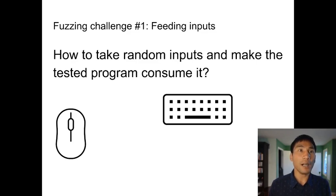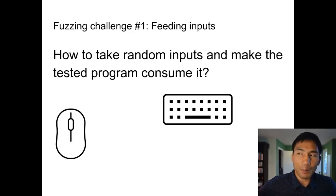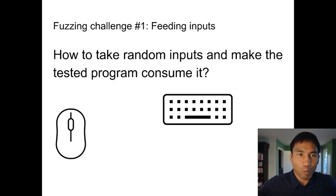So why is fuzzing hard? There are a bunch of challenges. The first problem is about inputs. The example I showed was feeding random bits to a command-line program, but it's harder when it's a web application, which is a pretty common kind of thing. You need to generate some sort of web input, like button presses and mouse movements, which can be done but it's not that straightforward.